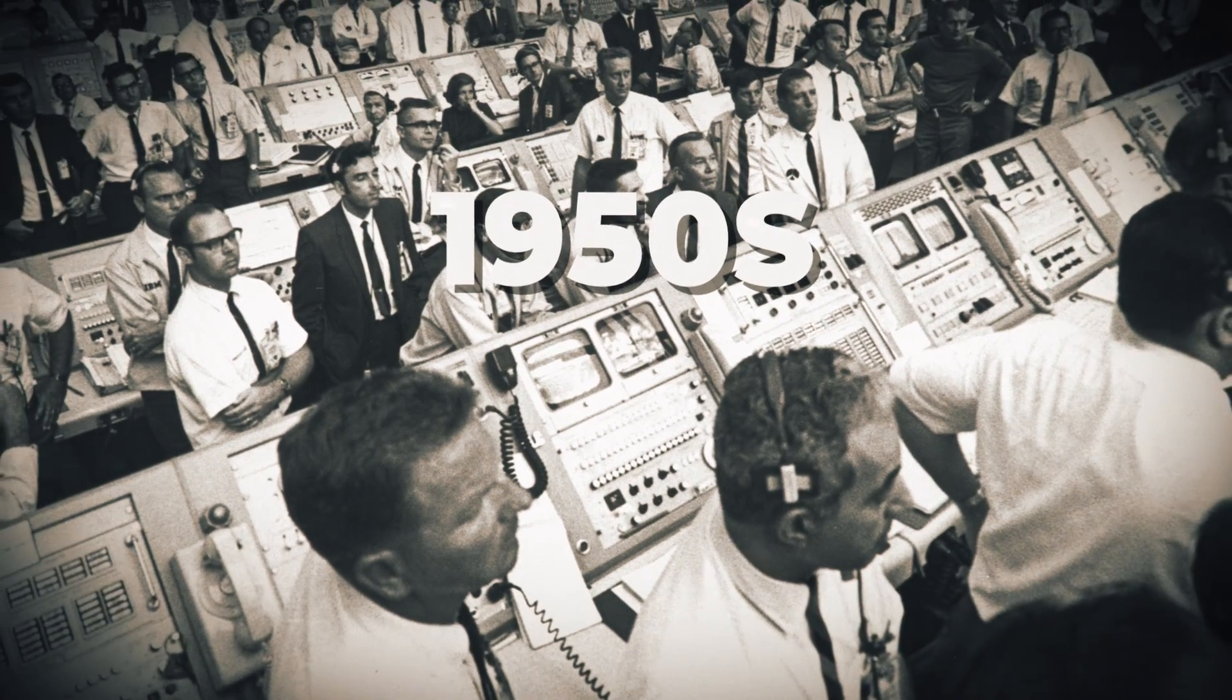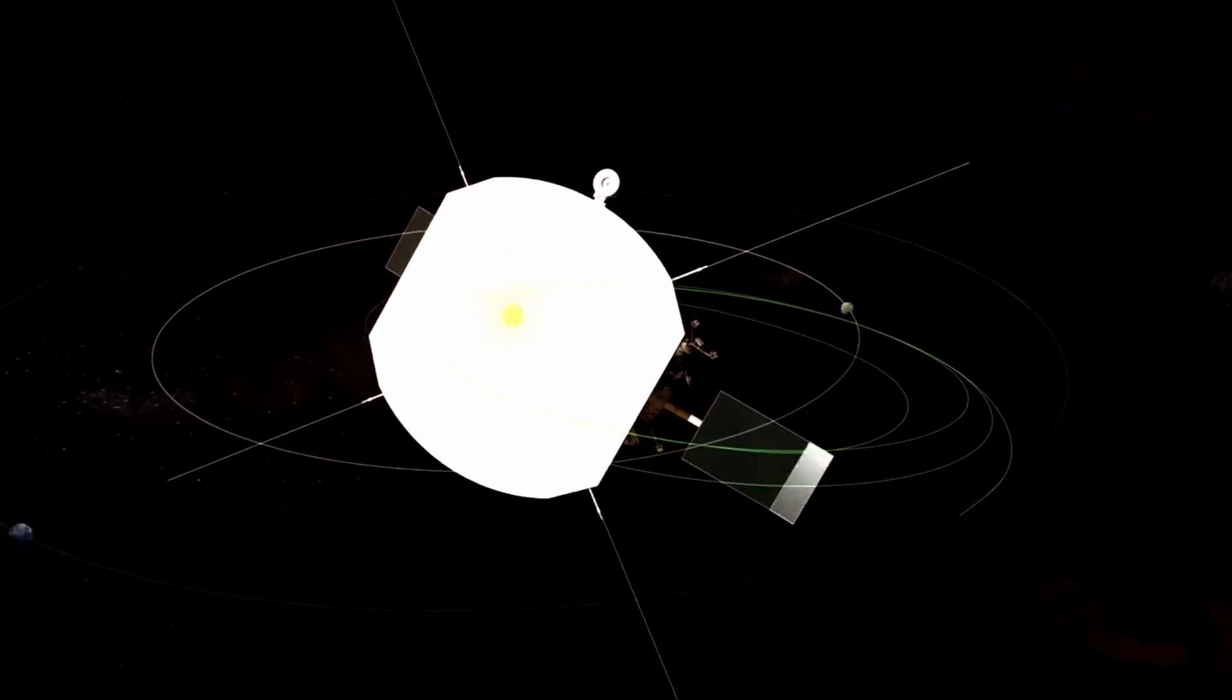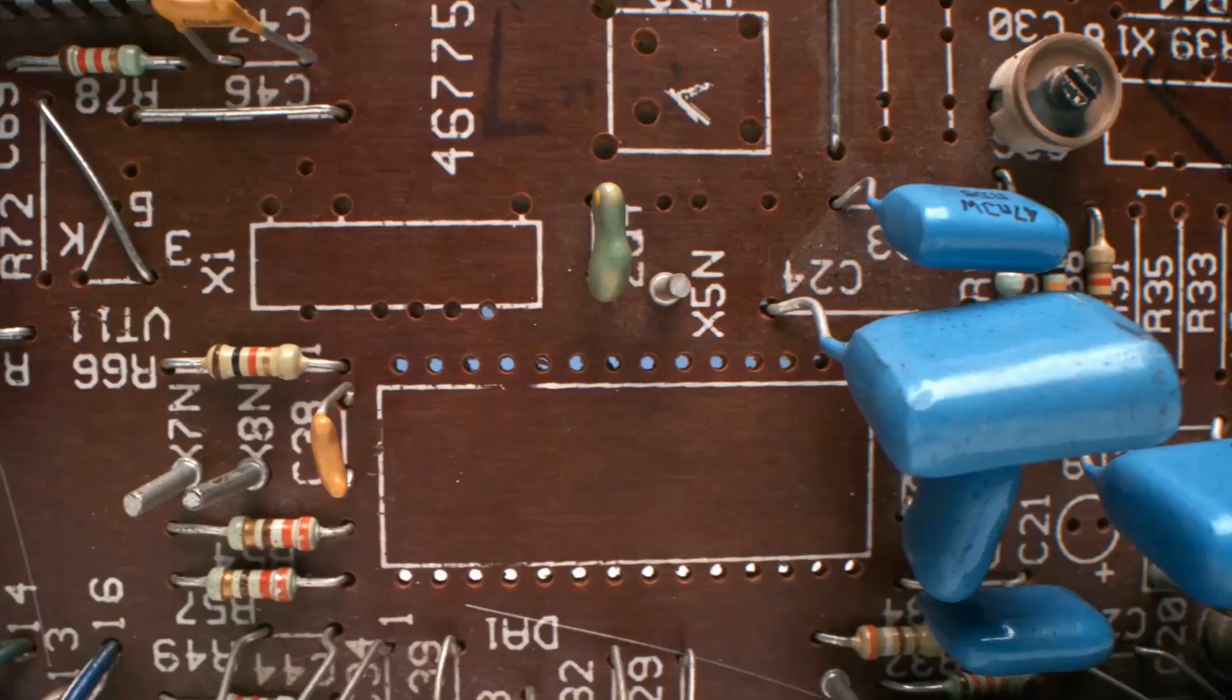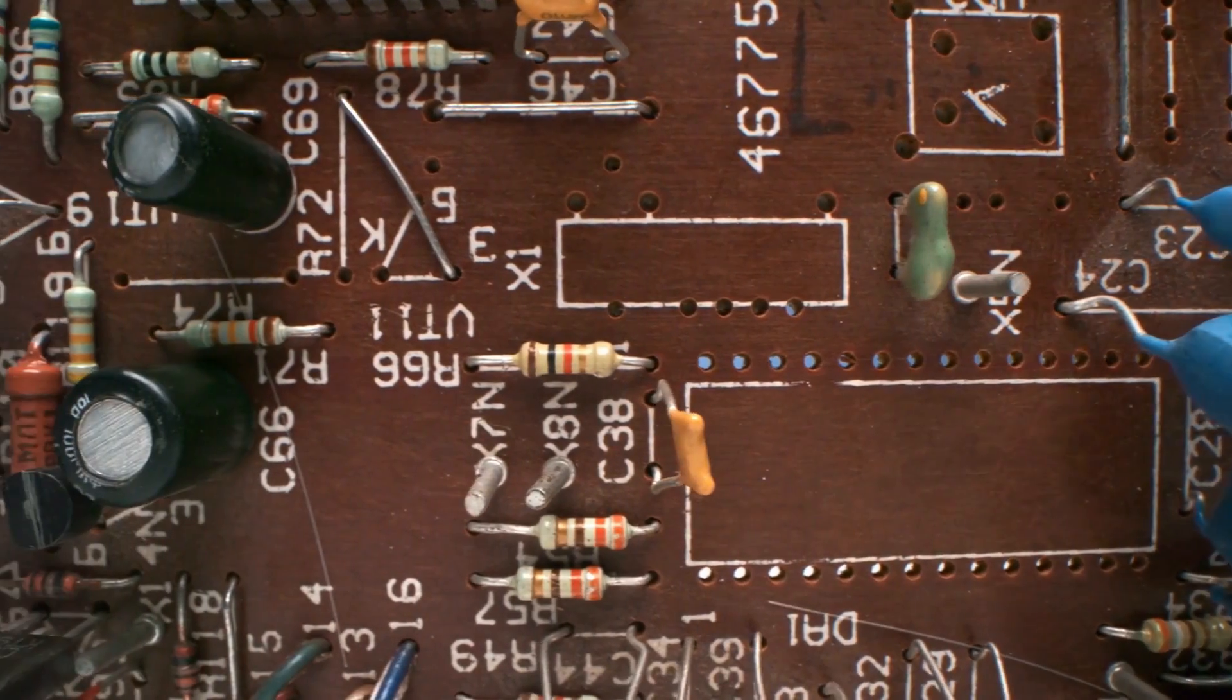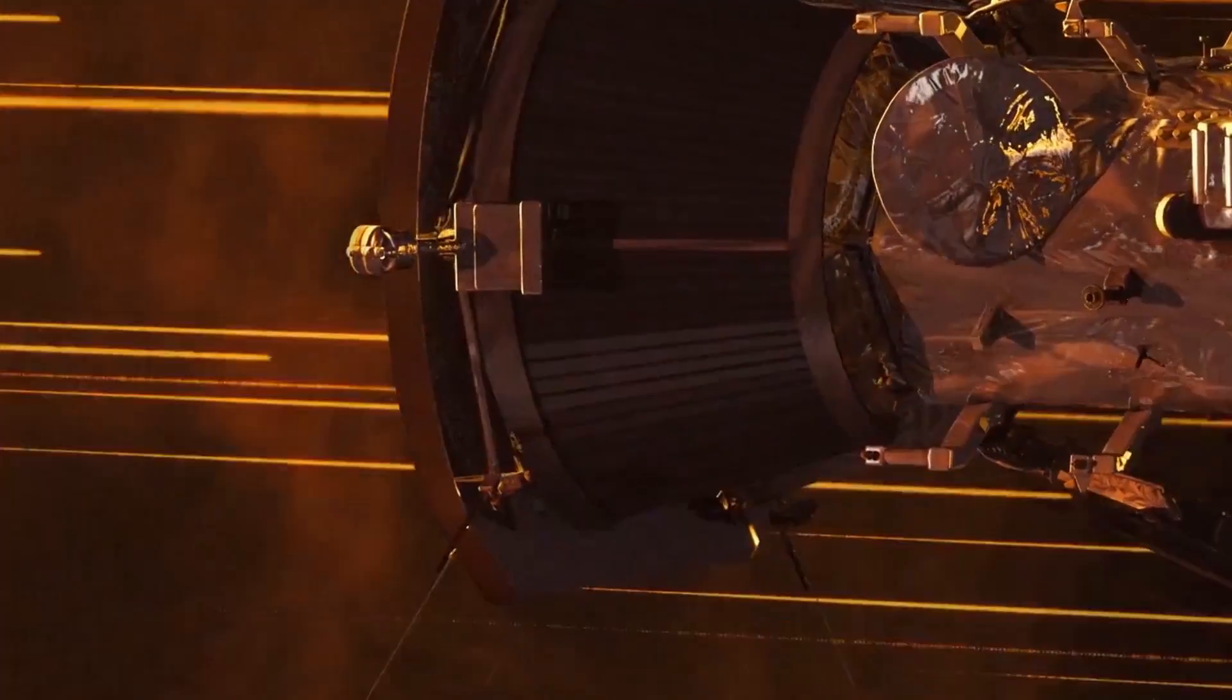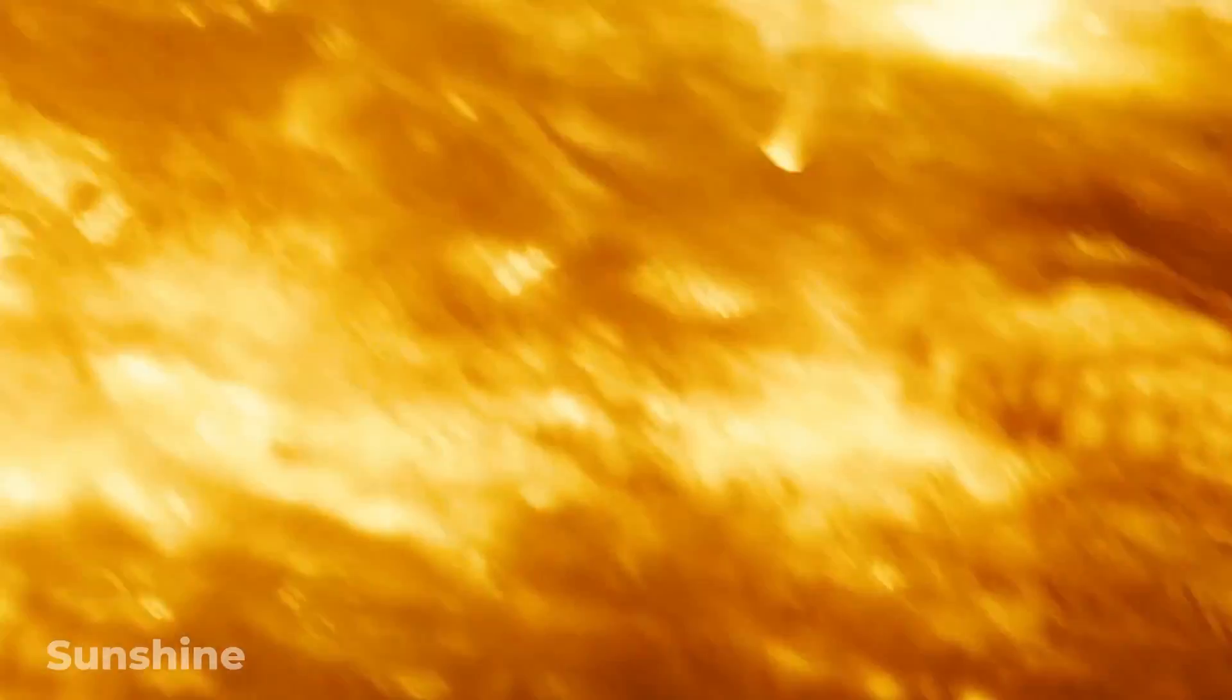In fact, back in the 1950s, a probe like this was proposed, but as you can imagine, science hadn't caught up with the dreams of scientists, and there was no feasible way to create a spacecraft that could withstand the heat from the Sun.